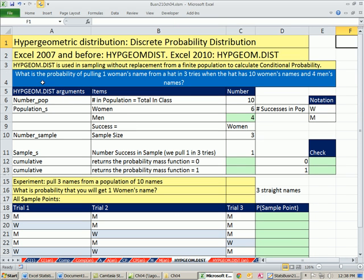Let's look at this example. What is the probability of pulling one woman's name from a hat in three tries when the hat has 10 names total: 6 women's names and 4 men's names? Here's everything in the population, 10. There's 6 women's names in the hat, 4 men.